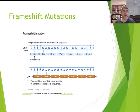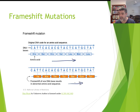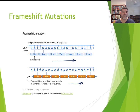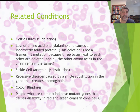To summarise: with base substitutions, you could get a stop signal, the same amino acid, or a different amino acid — but only one part of the gene is affected. With a frame shift, the whole sequence changes. These are called frame shifts because the reading frame is moved forwards or backwards by one position, depending on whether there's been an addition or a deletion.